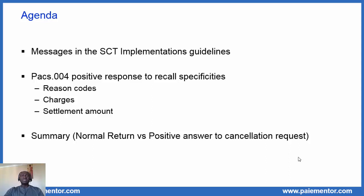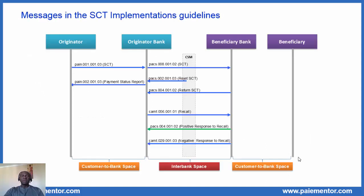In this video, we'll start as usual with the overview of all the messages exchanged in the SCT classic scheme, so that we can locate the PAX4 positive response to a recall and the parties which exchange it. Then we look at the specificities of the PAX4 when it is used as a positive answer to a cancellation request. In the final part, all specificities of the PAX4 positive response to a recall compared to the normal return will be presented. So let's begin with the overview of SCT messages.